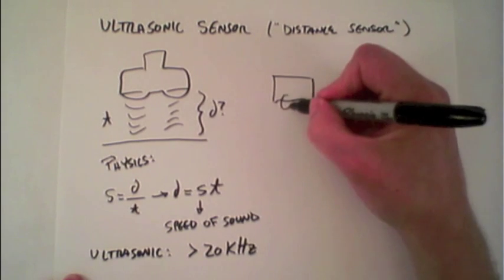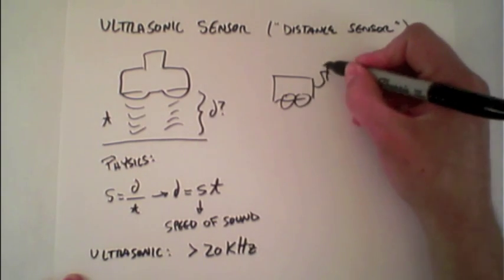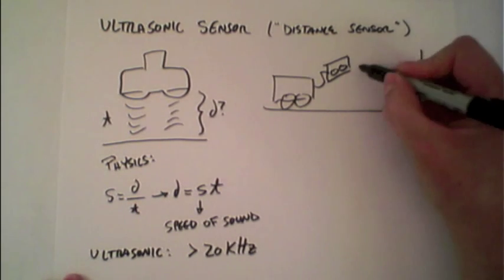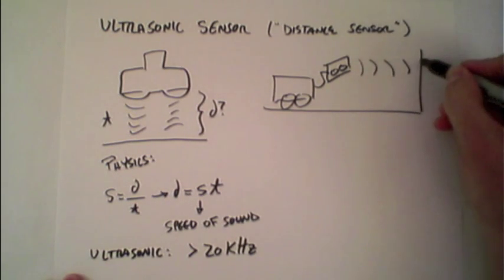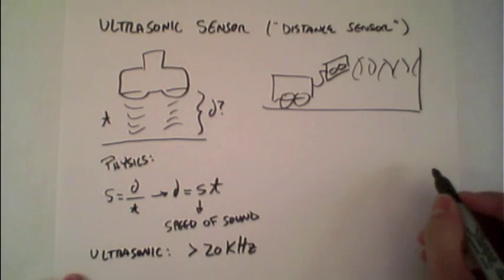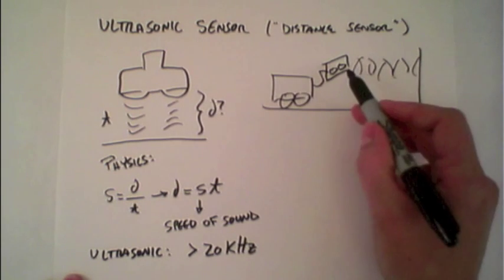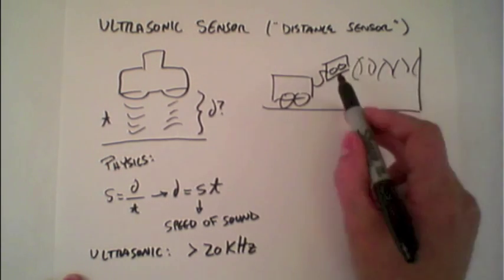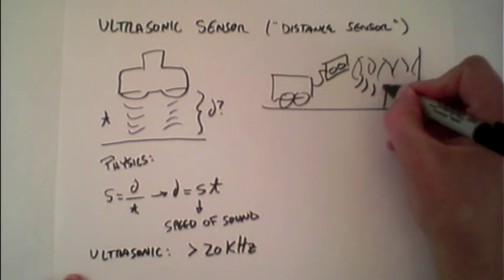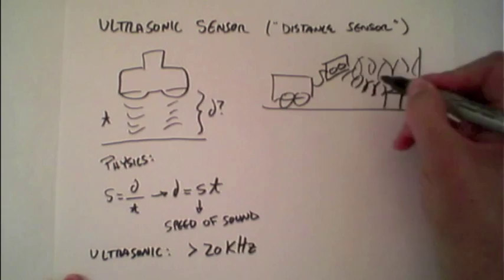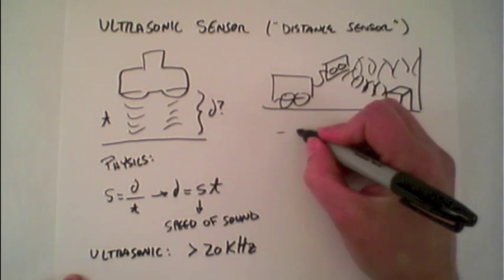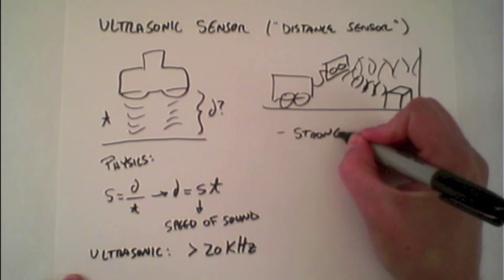When you attach it to your robot, typically here in the front, what happens is it sends out these waves that then bounce off some surface, come back, and it uses that to measure the distance. Because these waves are emitted out of the sensor and heading out, they may also bounce off of other objects that are in the environment. So the way that it works is it looks for the strongest reflection.